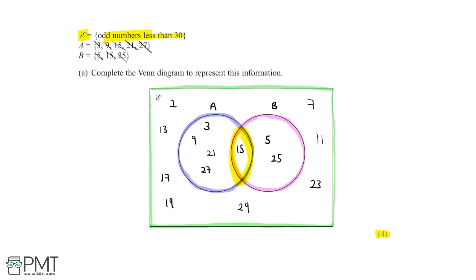Part A is worth 4 marks. The first mark is for labeling the Venn diagram correctly — we labeled the circles A and B. The second mark is for having only the number 15 within the intersection, which we've clearly shown. The third mark is for having the values 3, 9, 21 and 27 in circle A, or the values 5 and 25 in circle B — we've done both. The fourth mark is for including every odd number less than 30 that's not in set A or set B outside the circles, giving us full marks on part A.